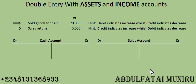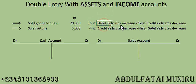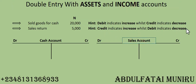Most of us have this issue with what account we are to debit and what account we are to credit. Remember the double entry principle which says debit the receiver and credit the giver. For asset accounts, a debit posting indicates increase while a credit posting indicates decrease. Conversely, a credit posting to an income account indicates increase while a debit posting to an income account indicates decrease.